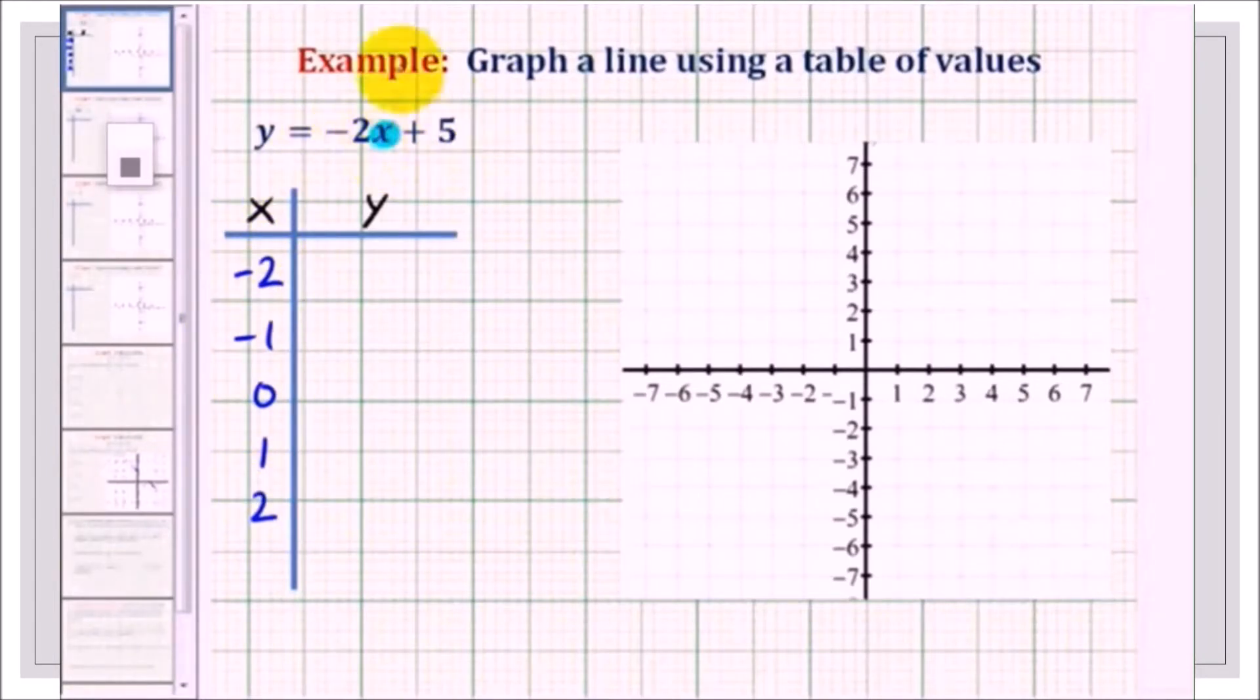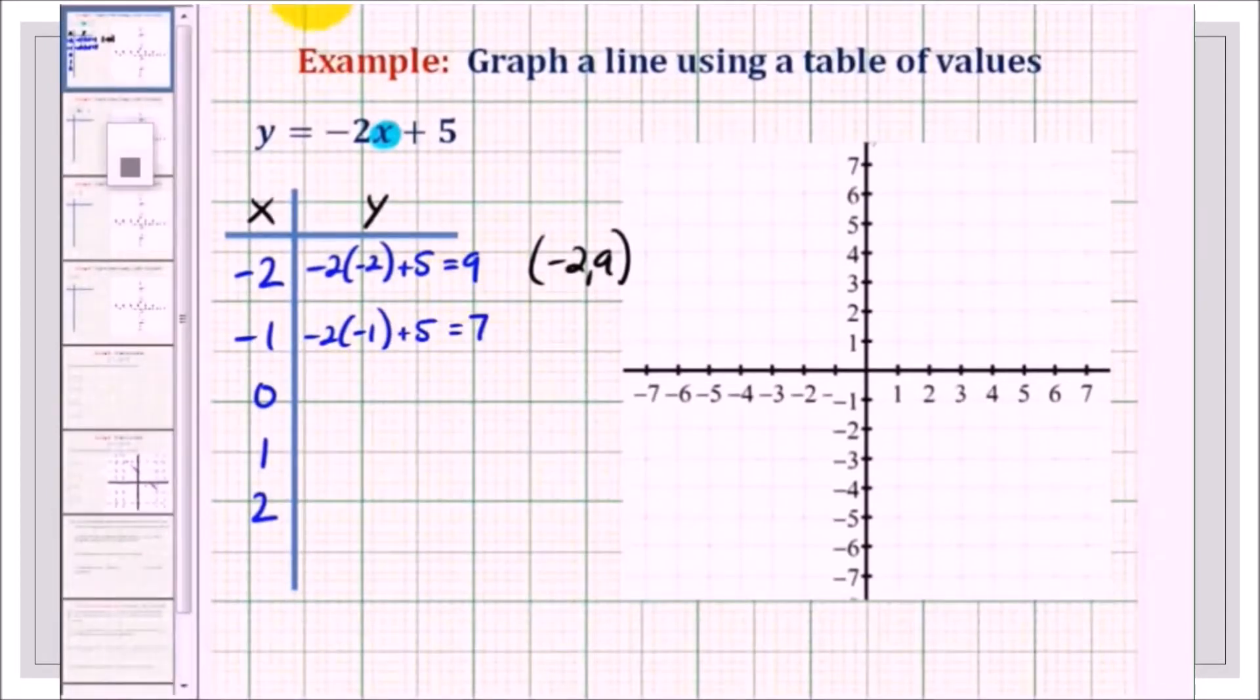Now let's use the values into this x. Let's start with negative 2. So that would be negative 2 times negative 2 plus 5. Negative 2 times negative 2 is 4 plus 5, that is 9. So when x is negative 2, y is 9. So that gives us the point negative 2, 9.